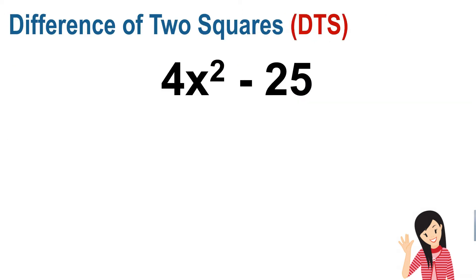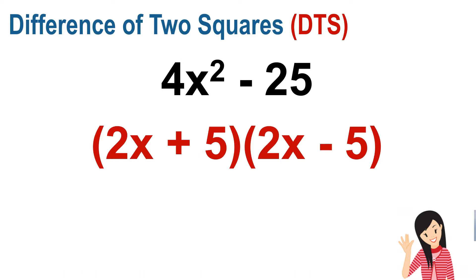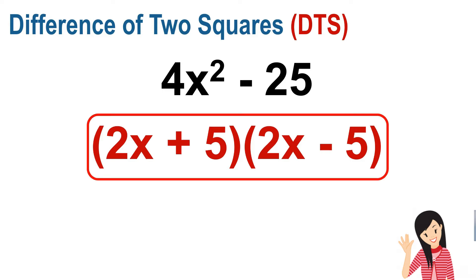For the difference of two squares, each term must be a perfect square and the operation must be subtraction. To get the answer, you get the square root of each term. The square root of 4x squared is 2x, and the square root of 25 is 5. You then use different signs, so the answer is (2x + 5)(2x − 5).